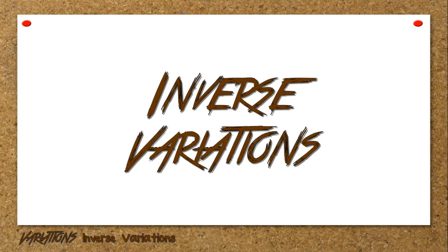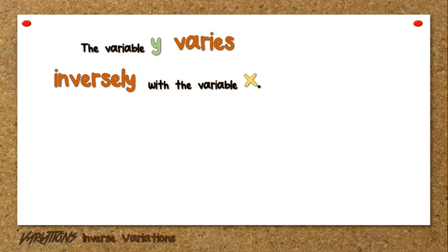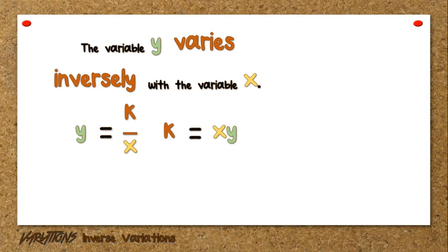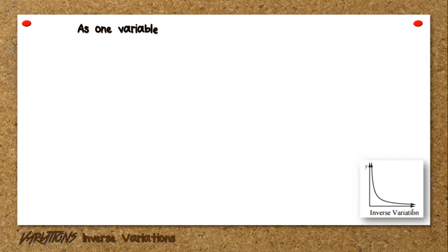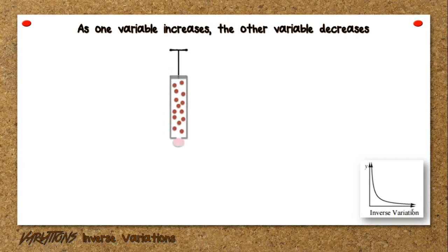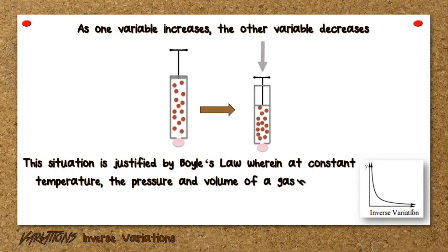Inverse variations. Inverse variation states that the variable Y varies inversely, or is inversely proportional, with the variable X. Remember the keywords 'varies inversely' or 'inversely proportional,' which can be translated mathematically as Y equals K over X, or equivalently K equals Y times X, wherein K is a non-zero real number also called the constant of variation. As X increases, Y decreases, and vice versa. This is justified by Boyle's law, wherein at constant temperature, the pressure and volume of gas have an inverse relationship. The graph is a curve that never touches either axis.